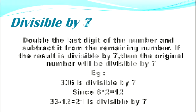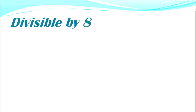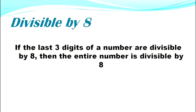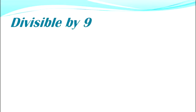Divisible by eight: if the last three digits of a number are divisible by 8, then the entire number is divisible by 8. Examples include numbers where the last three digits, such as 384 and 768, are divisible by 8.